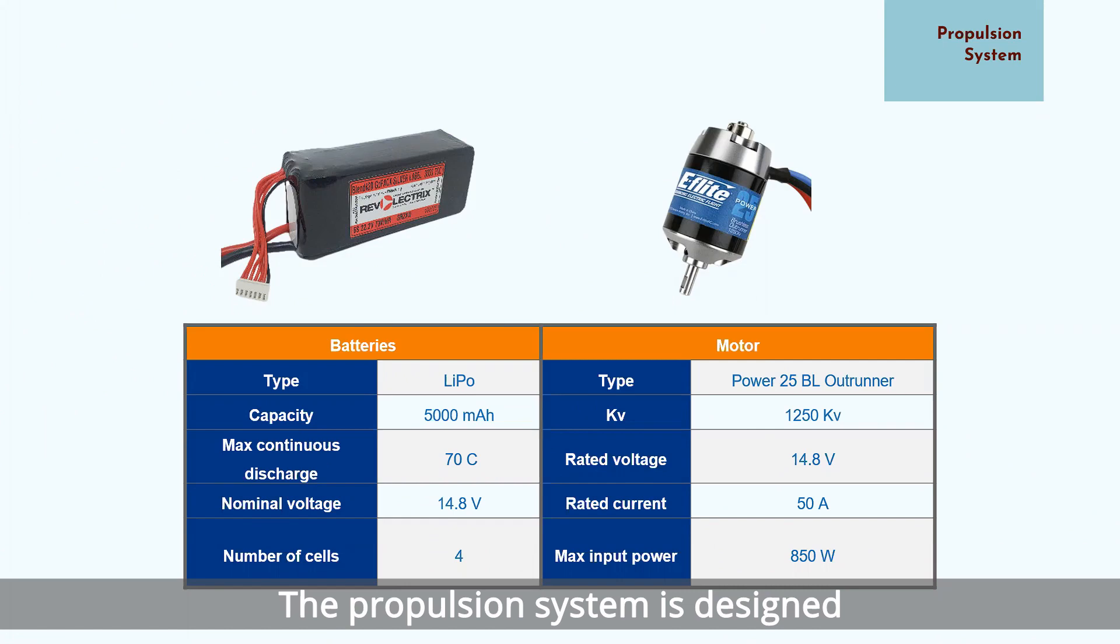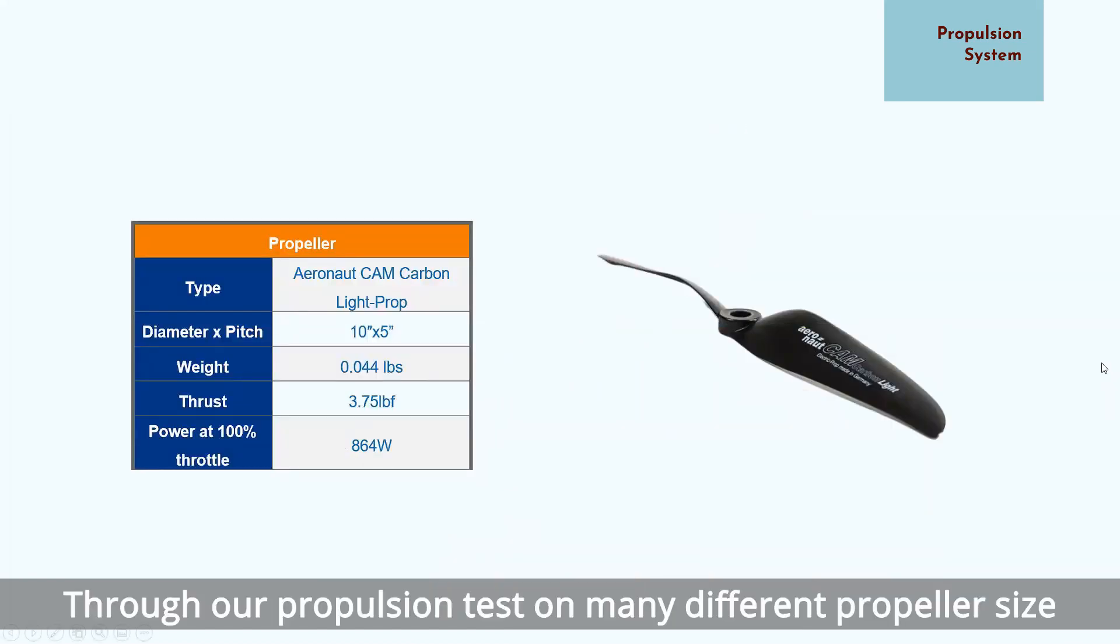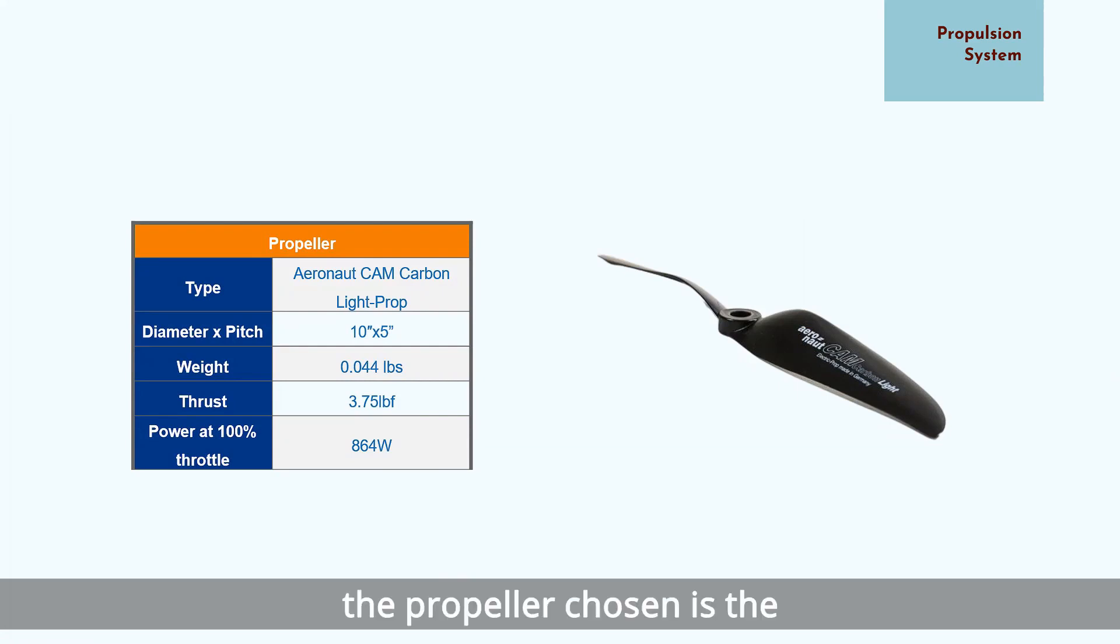The propulsion system is designed to meet the 840 watt power requirement of the aircraft. As such, the motor selected is the E-Flight Power 25BL outrunner motor which has a maximum input power of 850 watts, just above our power requirement. The motor is rated at 14.8 volts, and a 4S lipo battery with 5000 mAh capacity is chosen to supplement it. Through our propulsion tests on many different propeller sizes, the propeller chosen is the 10x5 carbon propeller made by Aeronaut. This propeller is capable of producing sufficient thrust at a lower power rating and propeller weight.